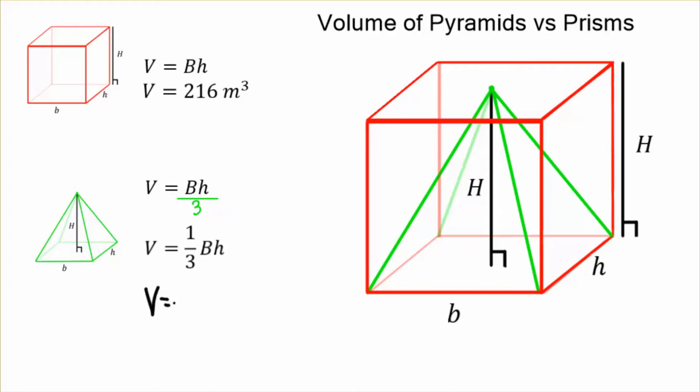So we take our volume. It's one-third times that base times height, which was 216 meters cubed, or cubic meters. In our calculator, we divide by three and it's 72 meters cubed.